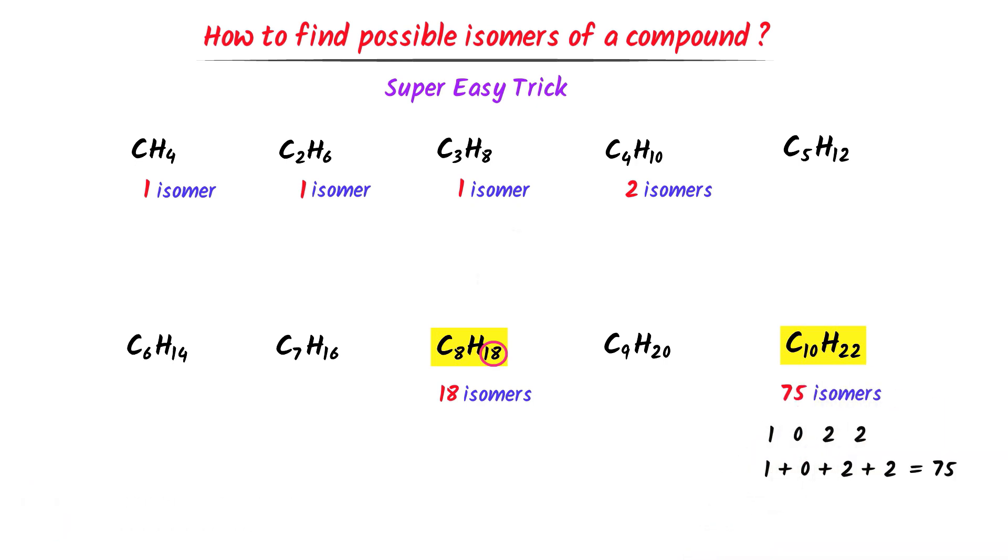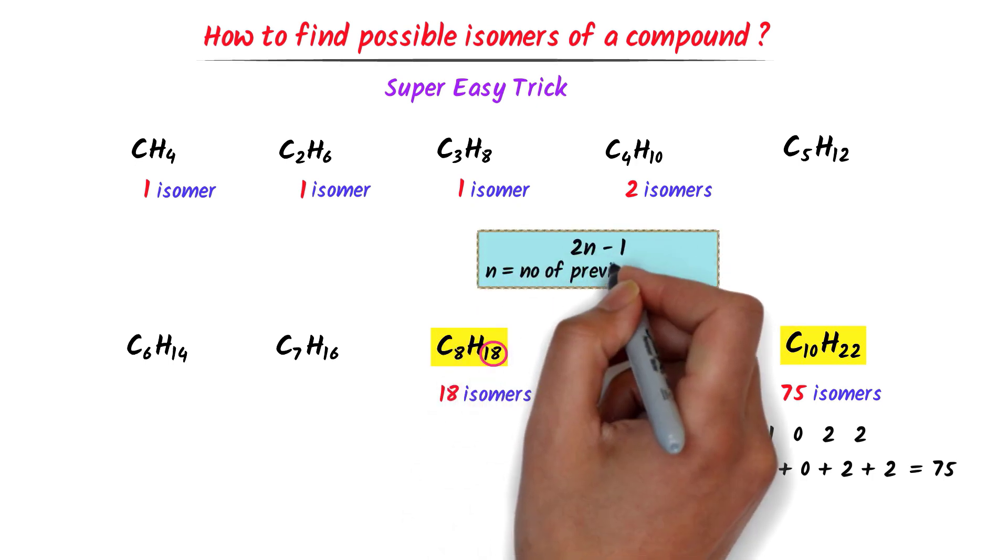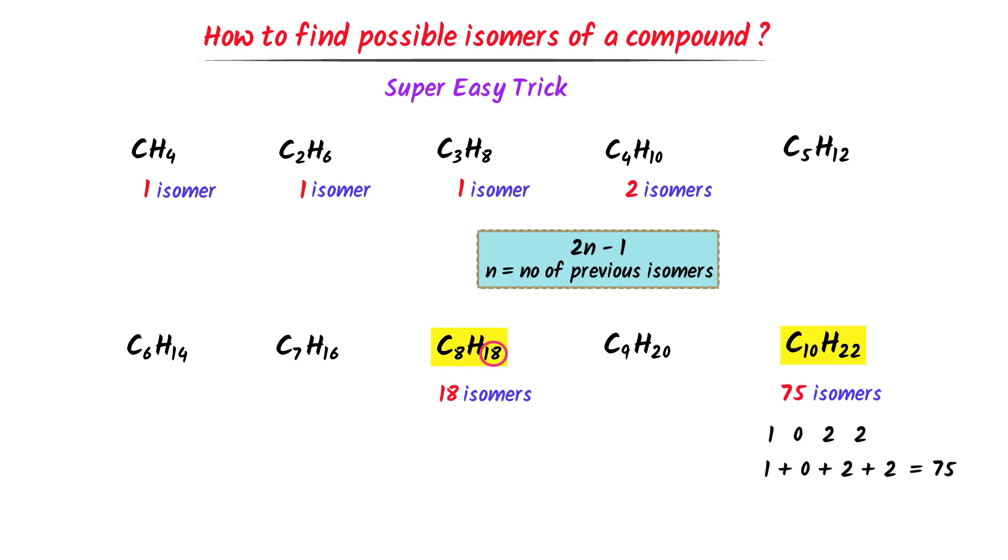In case of the remaining members, I use this common formula, 2n-1, where n is the number of previous isomers. For example, in case of pentane, I use the formula 2n-1. The number of previous isomers is 2. Hence, n is equal to 2. I write, 2 times 2 minus 1 is equal to 3. Thus, pentane has 3 isomers.